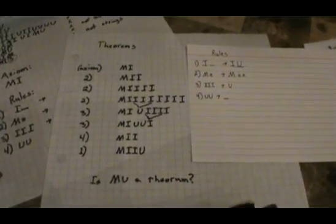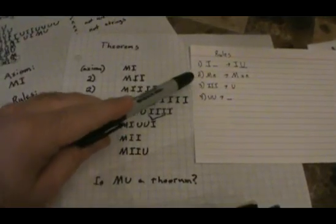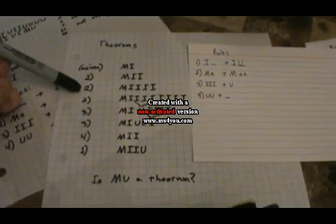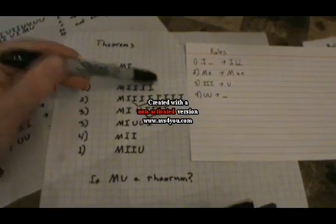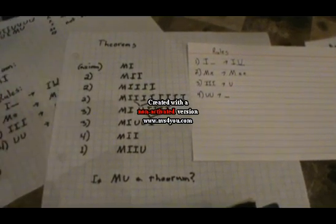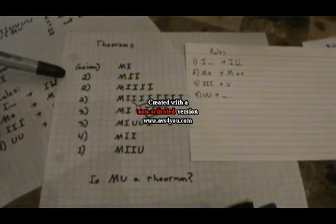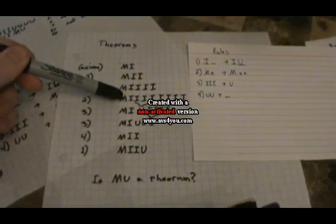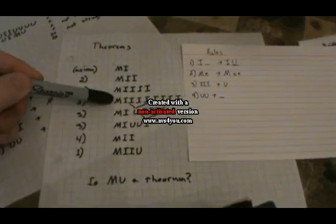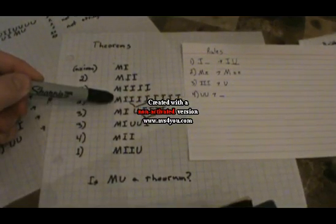First thing we'll do is apply rule number two. Rule number two says that whatever comes after the M, you can double it. So we had MI, and we have MII after using rule two. Then let's use rule two again — we had MII, we double the II, and now there are four of them. And we can keep doubling: now we have eight. This illustrates that there are certainly infinitely many theorems, since you can just keep doubling as many times as you want.